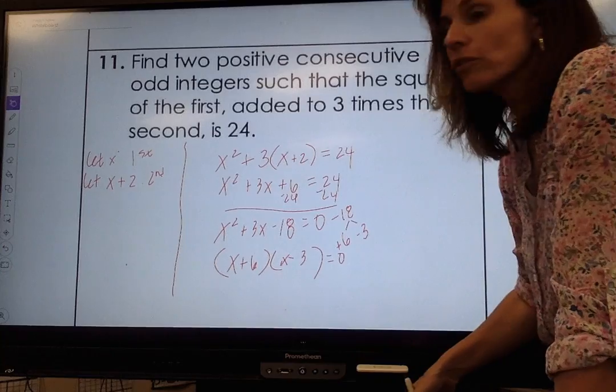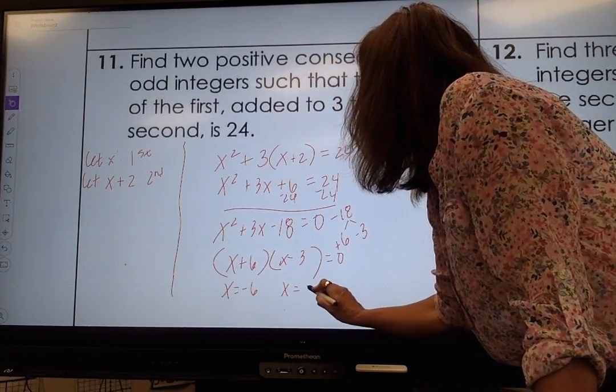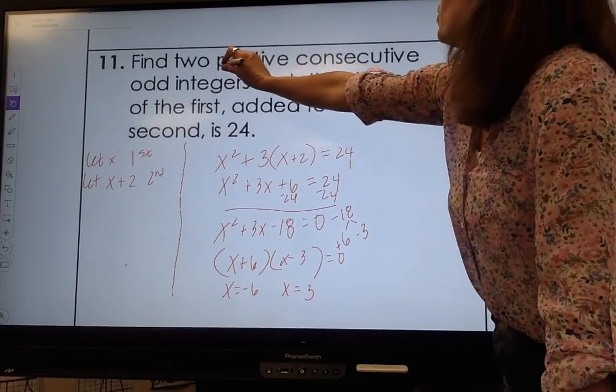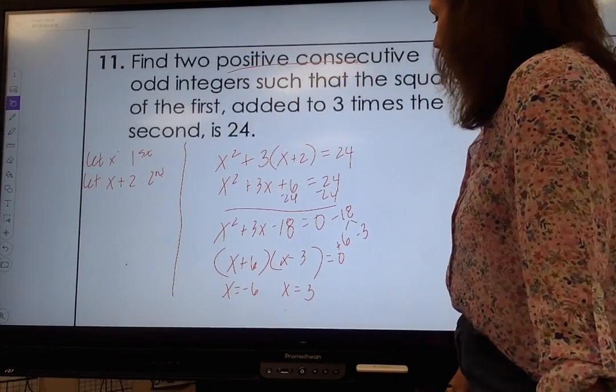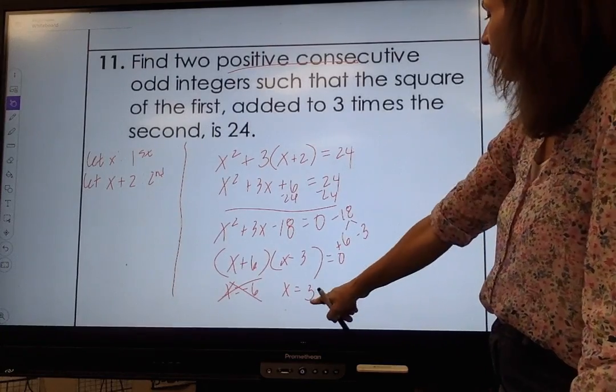Now I'm setting those factors equal to 0. So x equals negative 6 and x equals positive 3. Now it says two positive consecutive integers, so I'm going to cross out that negative 6 and then I'm going to look.